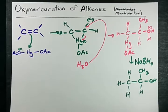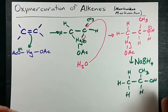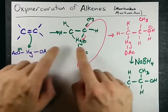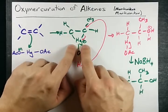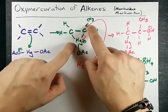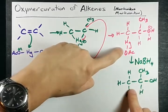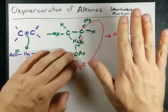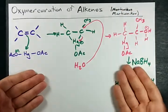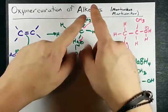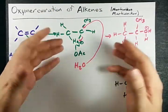NaBH₄ rocks my world that way. In any case, this is it — this is how it goes. The double bond breaks open to attack the mercury. You get a triangle mercurinium ion intermediate. Water backside attacks it. Then you reduce it with NaBH₄ to get the alcohol out. It's a Markovnikov addition. This is the mechanism — this is oxymercuration of alkenes. And I am your hero.